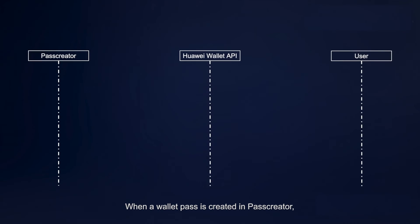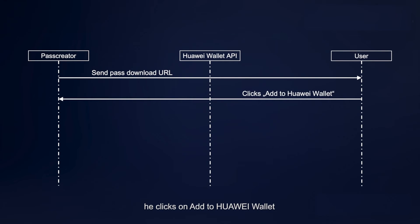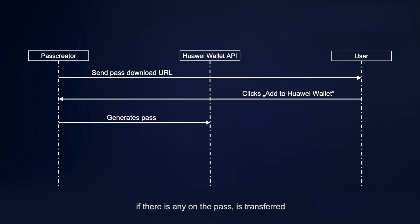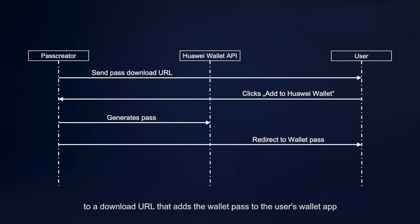When a Wallet Pass is created in PassCreator, the system automatically generates a unique download URL. That URL is sent to the user. If the user decides to save the Wallet Pass, he clicks on Add to Huawei Wallet, and in that case PassCreator sends an API call to Huawei Wallet's API. In that process, the personal data of the user, if there is any on the pass, is transferred and the pass is generated. PassCreator then automatically redirects the user to a download URL that adds the Wallet Pass to the user's wallet app.